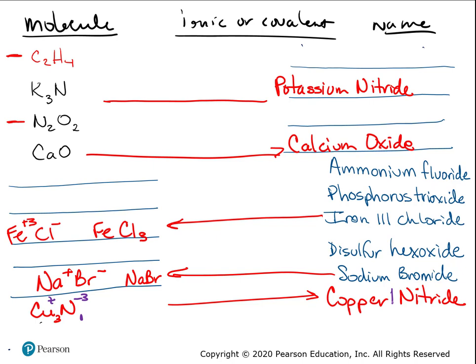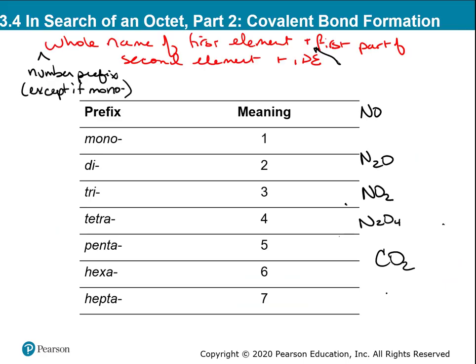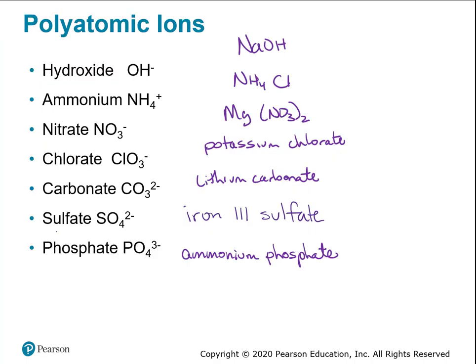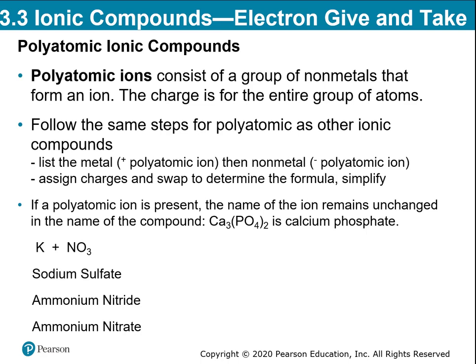Then there are two more: SO₄²⁻ is the sulfate ion — magnesium sulfate is in Epsom salts. MgSO₄ is magnesium sulfate. And PO₄³⁻ is the phosphate ion — it has the highest charge at −3 and is the only one with a −3 charge. You've talked about phosphates in biology — they're part of DNA's sugar-phosphate backbone and also found in ATP (adenosine triphosphate), which has three phosphate groups linked together.